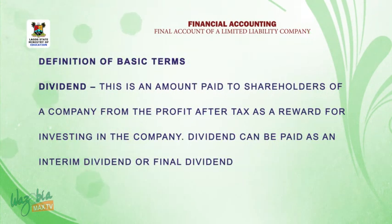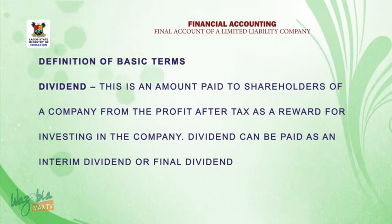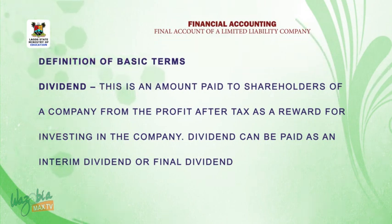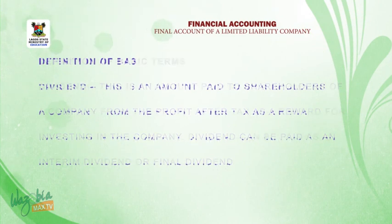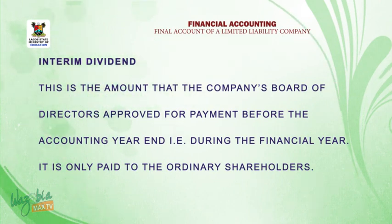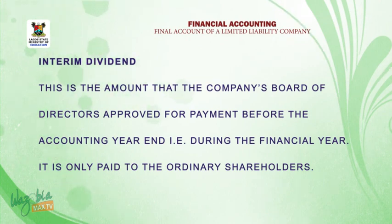Definition of basic terms. Number one: dividends. This is an amount paid to shareholders of a company from the profit after tax as a reward for investing in the company. Dividend can be paid as an interim dividend or final dividend. Interim dividend is the amount that the company's board of directors approved for payment before the accounting year end — that is, during the year. It is only paid to the ordinary shareholders.